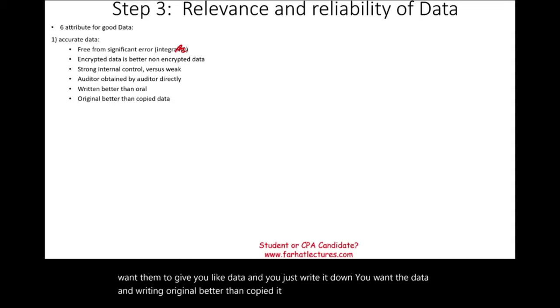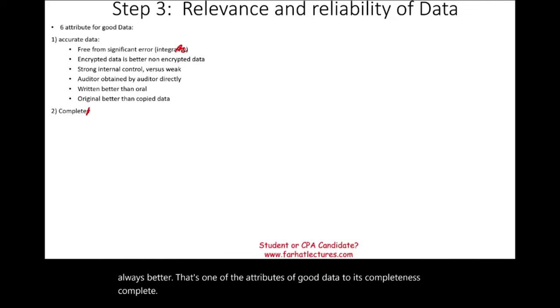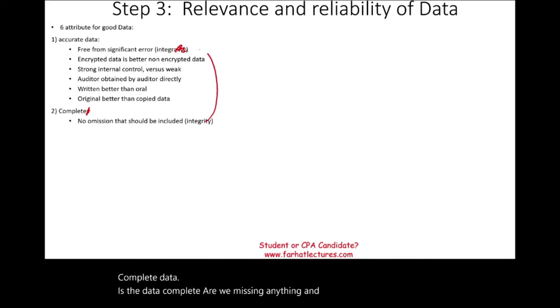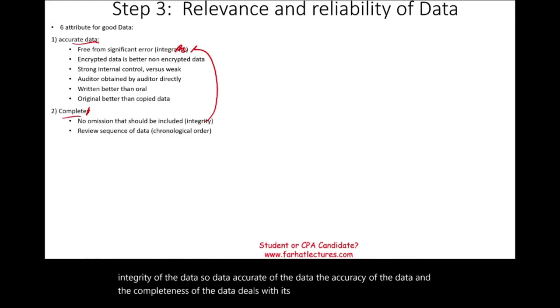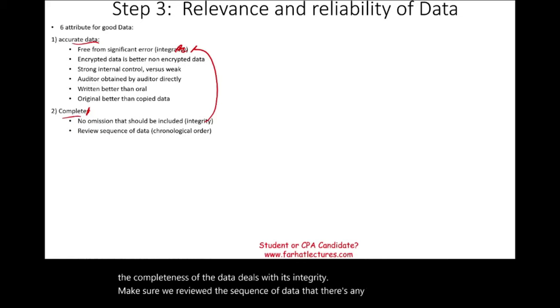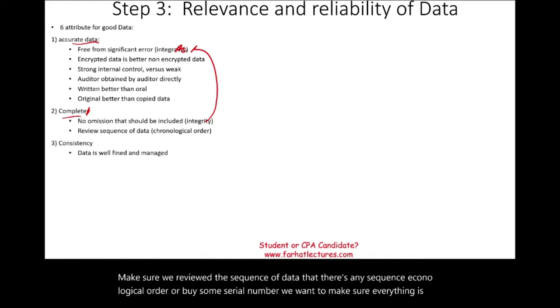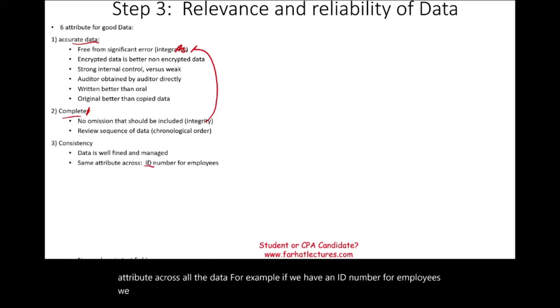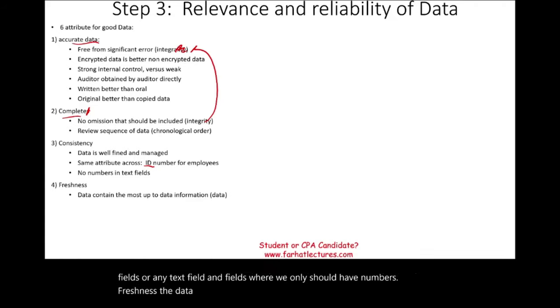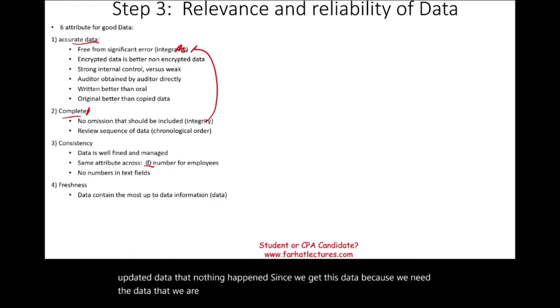Original data is better than copied data. Two: completeness — is the data complete? Are we missing anything? This also relates to data integrity. Review the sequence: if there's a chronological order or serial number, make sure everything is there. Three: consistency — data is well-defined and managed, with the same attributes across all data. For example, employee ID numbers should appear throughout. Check for numbers in text fields or text in numeric fields. Four: freshness — the data is up to date, covering the period we are testing. Five: timeliness — we need the data available when we need it; getting it too late is not useful.